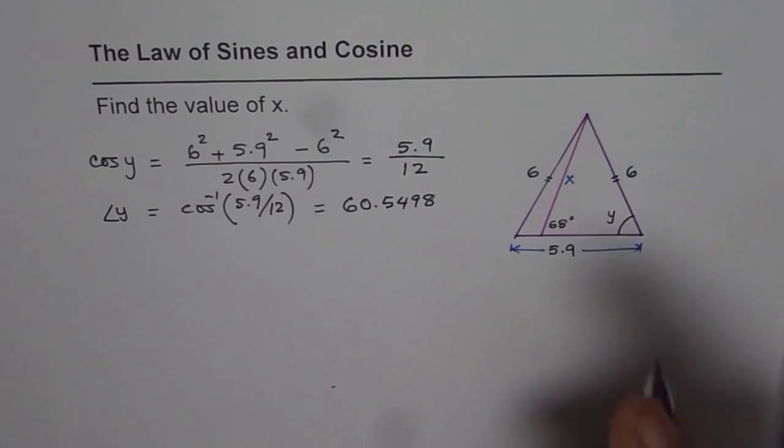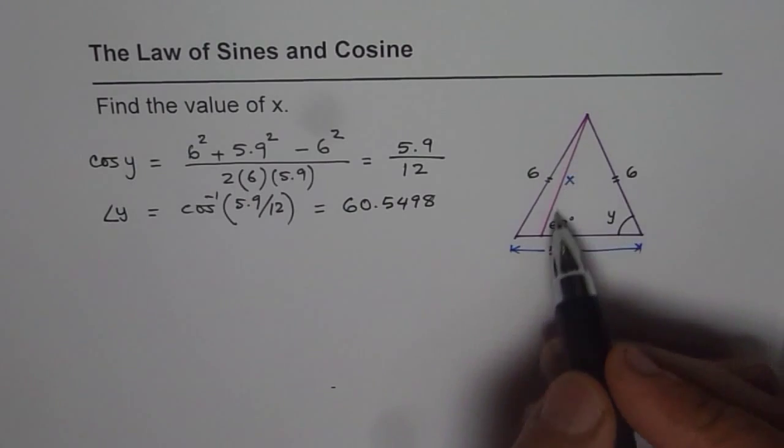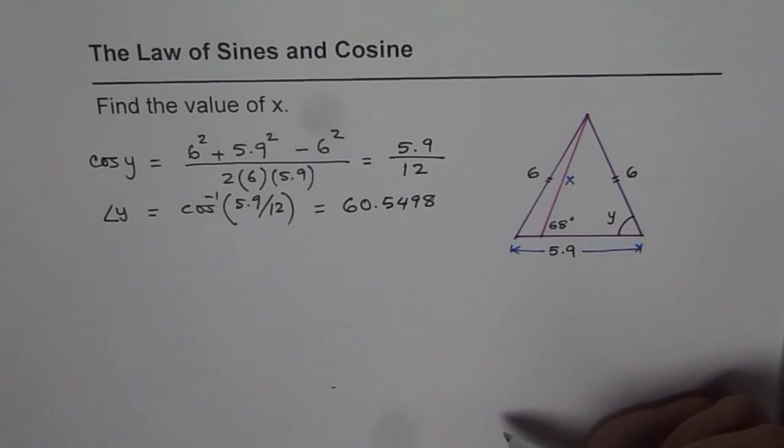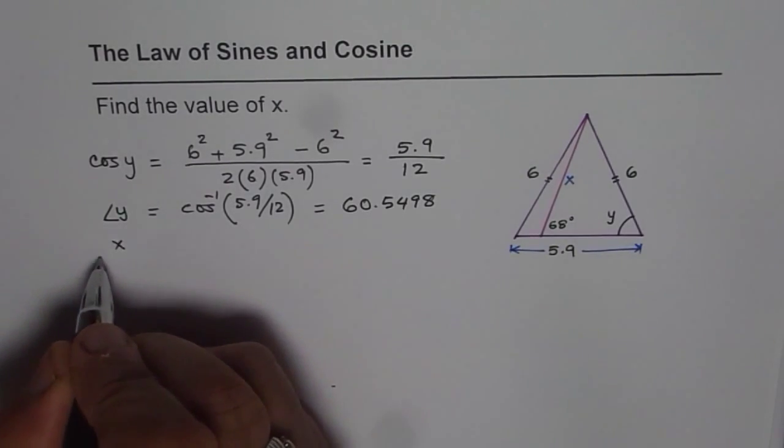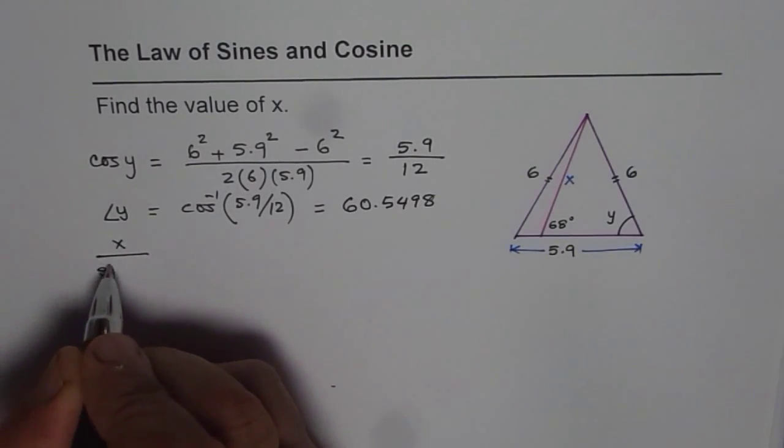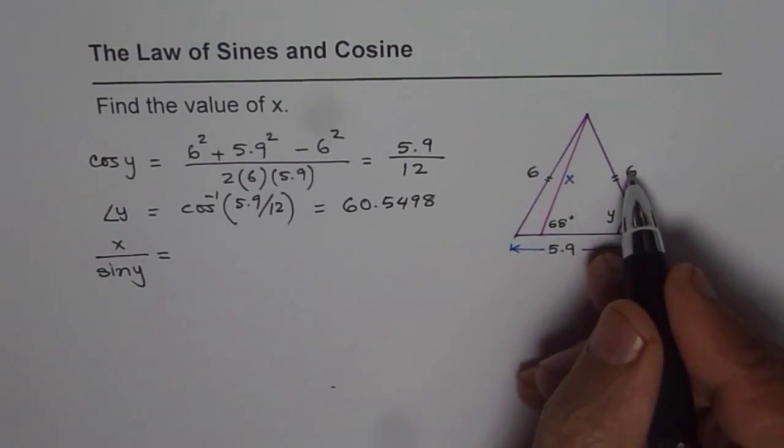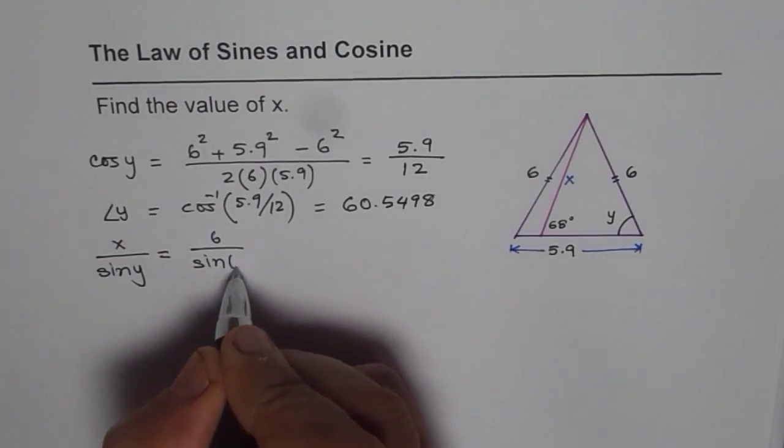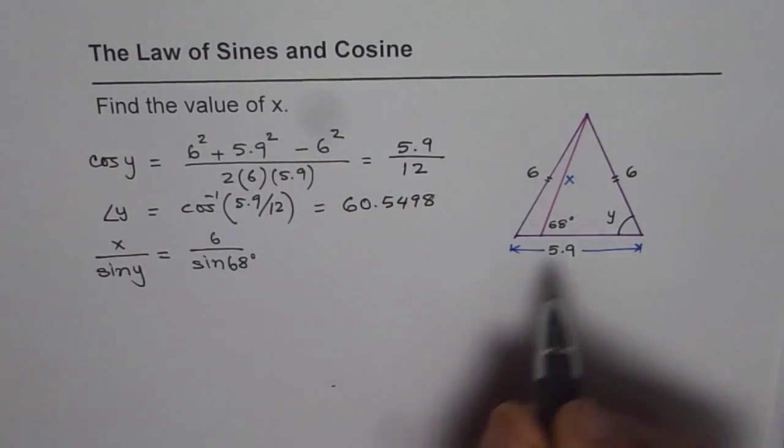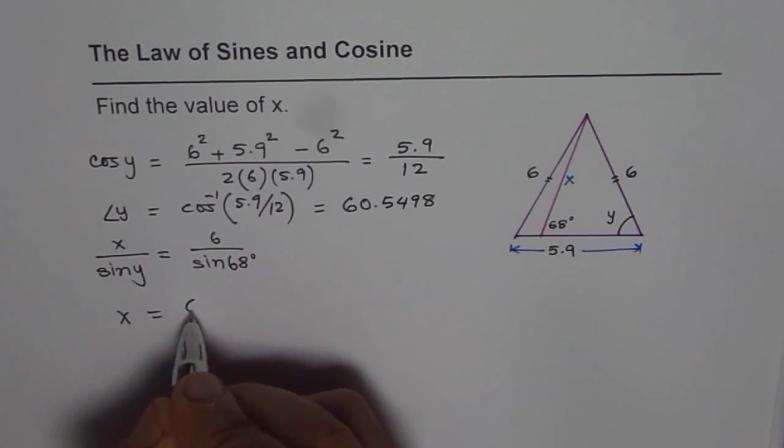Now, once we know this angle y, we can actually apply sine law within this triangle and find x. So length x over sine y should equal 6 over sine of 68 degrees.